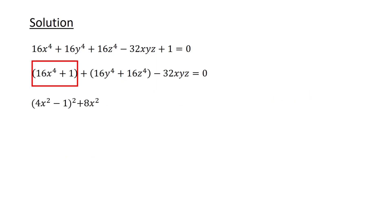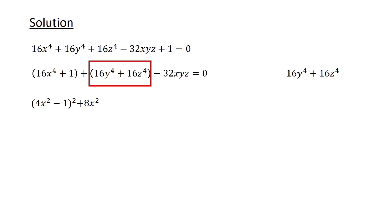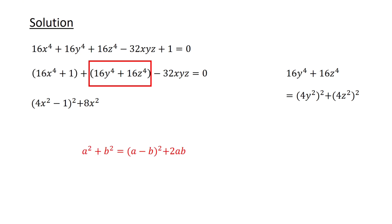Next, we examine the term 16y to the power of 4 plus 16z to the power of 4. Rewriting it as (4y squared) whole squared plus (4z squared) whole squared, we again complete the square using the same identity, this time with a equals 4y squared and b equals minus 4z squared. So we get (4y squared minus 4z squared) whole squared plus 32y squared z squared.